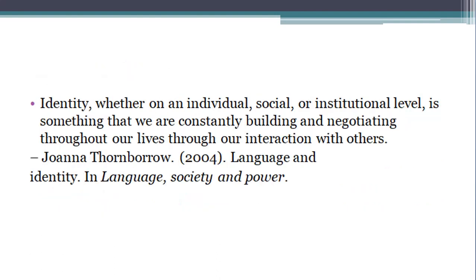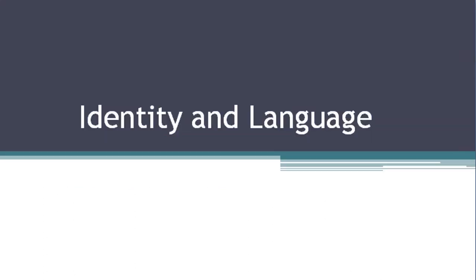Now let's take a general overview of what is identity. Johanna Thorne-Borrow has given this book identity definition: that identity — on an individual level, on a social level, or on an institutional level — is such a thing that constantly changes and builds and develops. How it develops: when we interact with others. This was all about identity and language, thank you so much.